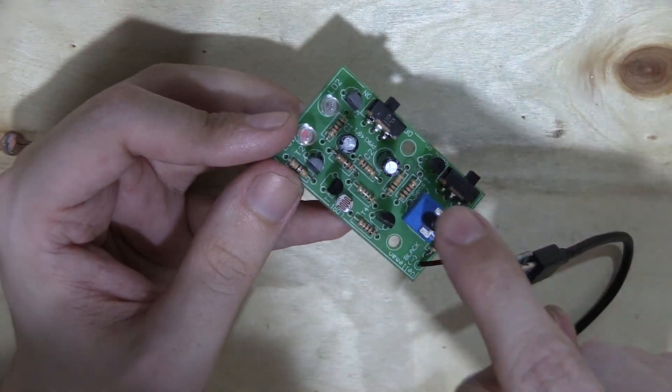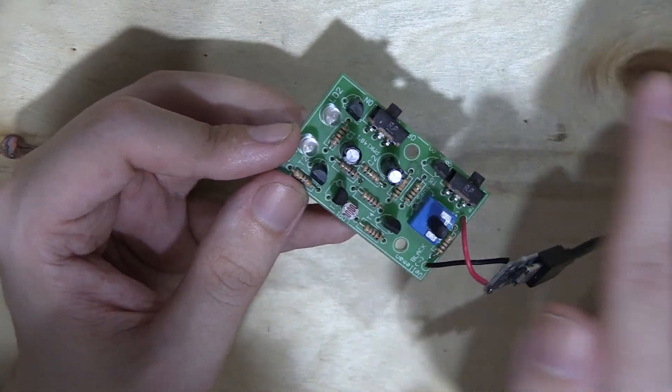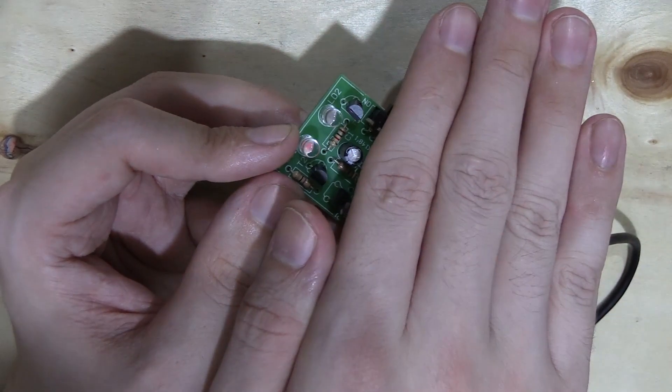And the sensitivity of the light sensor is adjustable using this pot here. So if we turn it down, you can see it stops flashing. And if I cover the sensor, it starts flashing.